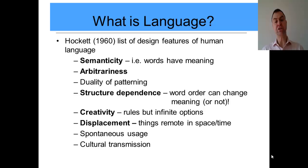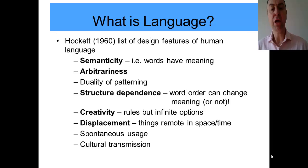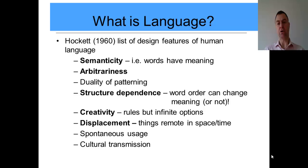Finally, linked to abstractness, we can use language in a displaced way — talking about something remote from us in both space and time. I can talk about things that happened yesterday, 300 years ago, or things that might happen in the future. I can talk about things in different countries or even different parts of the universe. Because we have these abstract concepts we can give labels to, we can refer to things not currently present, but remote in space and time. That's a really important aspect of language.